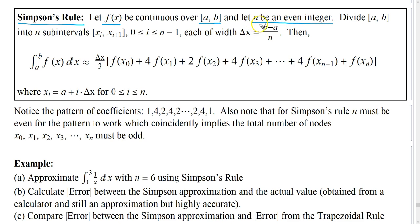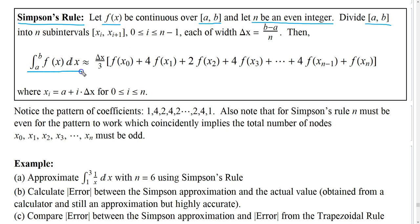We'll see why n has to be even in a second. What we do is divide the interval a, b into n subintervals, each of width delta x equaling b minus a over n. Then we have this result: the definite integral from a to b of f of x dx is approximately delta x over 3 times this quantity.